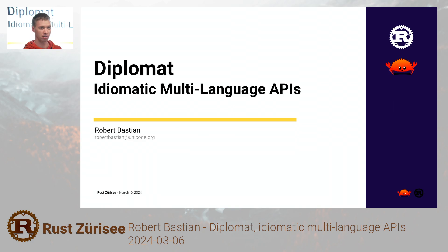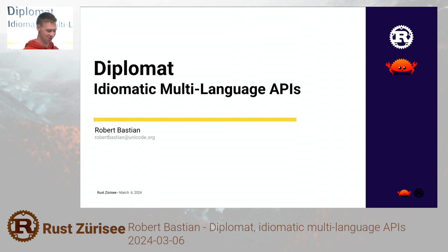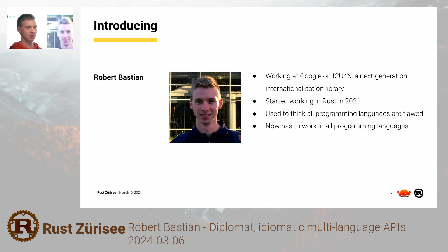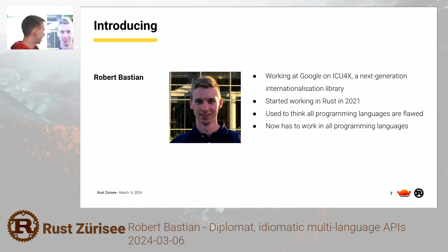I work at Google on a Unicode project, but this talk is not a Google talk — it's a Unicode slash my own thoughts talk, so don't pin me down on anything. About me: I'm working on ICU4x, which is an internationalization library, hence the Unicode affiliation. I've been working on Rust since 2021, so getting kind of proficient by now. I think Rust is a great language compared to all the other ones, and FFI — well, you have to do all the other ones as well.